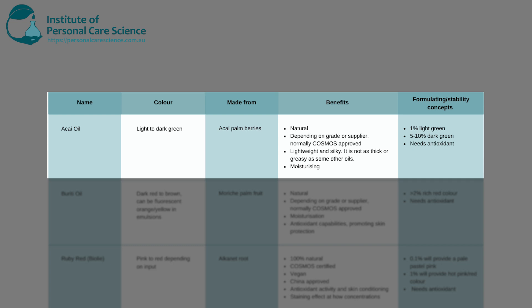Depending on the input, you will get different shades of green. Around 1% will give you a light shade of green, and the more you use, the darker it will go — so 5% to 10% is going to give you quite a dark shade of green.